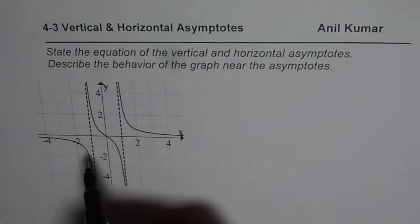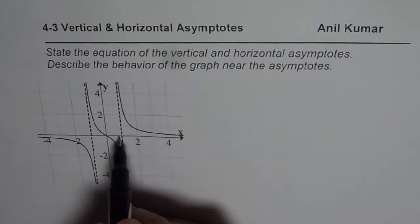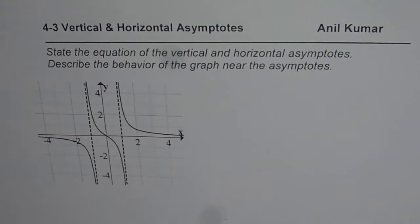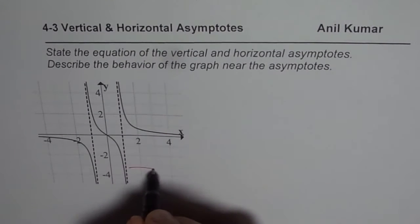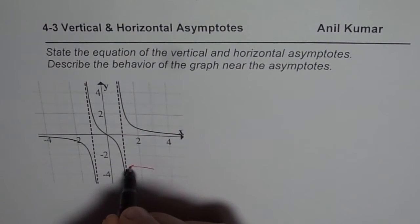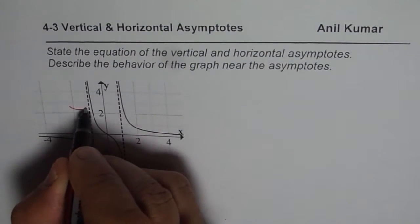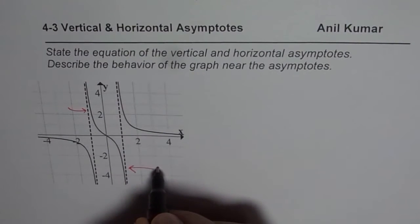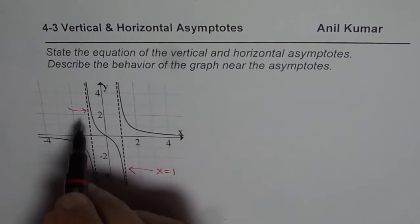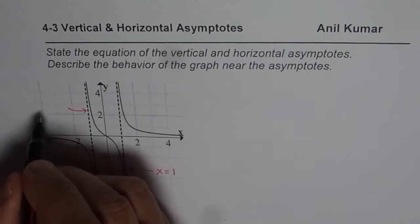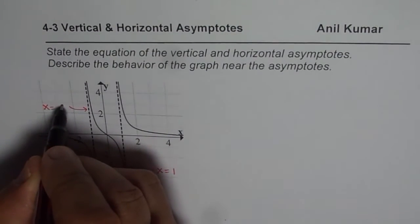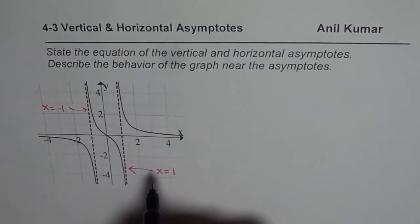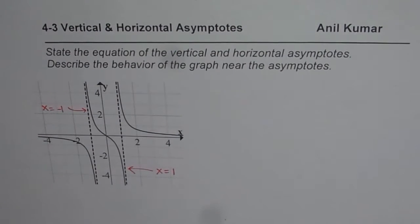For vertical asymptotes, we can see there are two vertical asymptotes here. The equation of one vertical asymptote is x equals 1, and the equation of the other one is x equals minus 1. So these are the two vertical asymptotes.